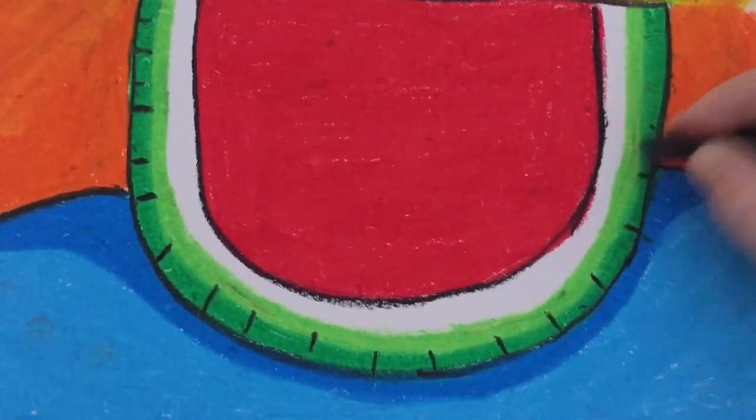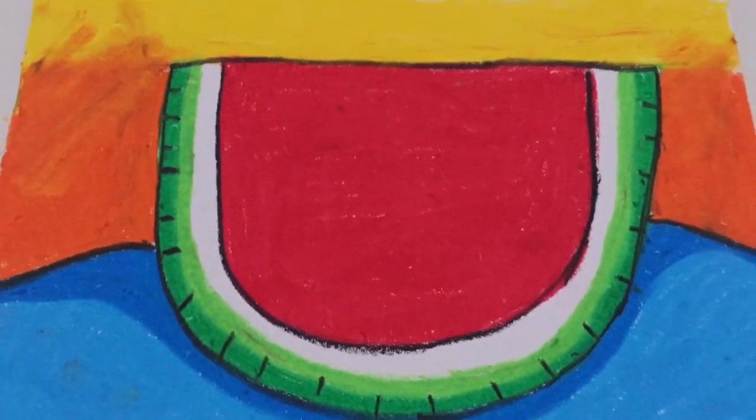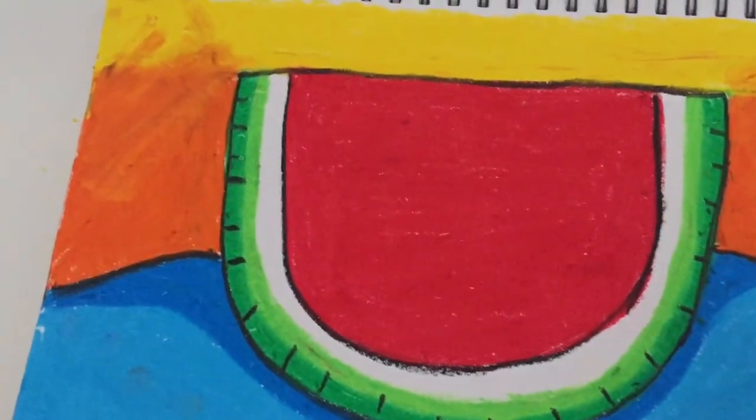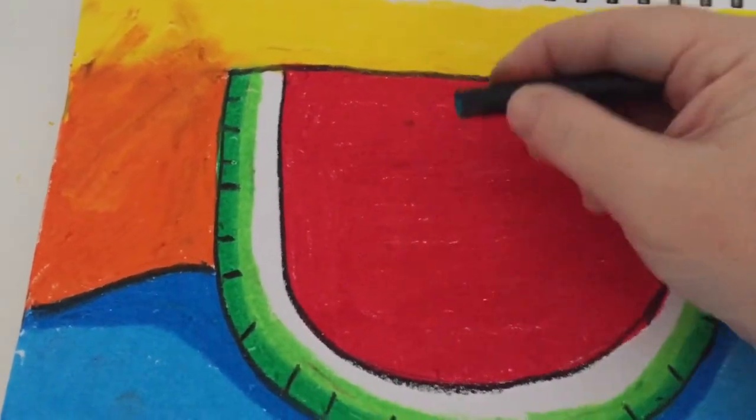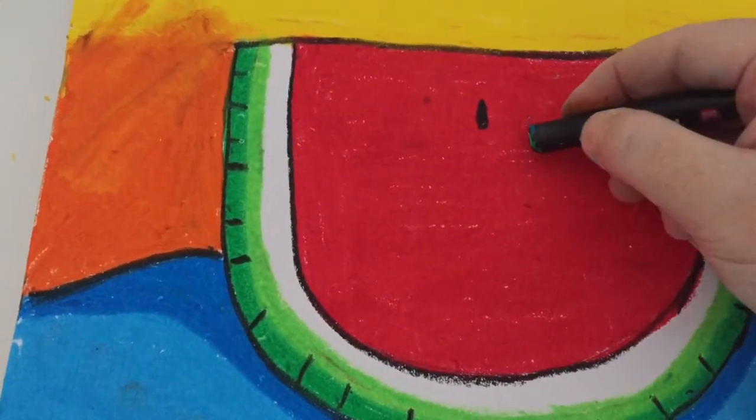Using the last part of the black to colour in the seeds. Make sure when you're doing your seeds that you do them randomly all over the place, not in lines because seeds don't appear in straight lines in our watermelon.